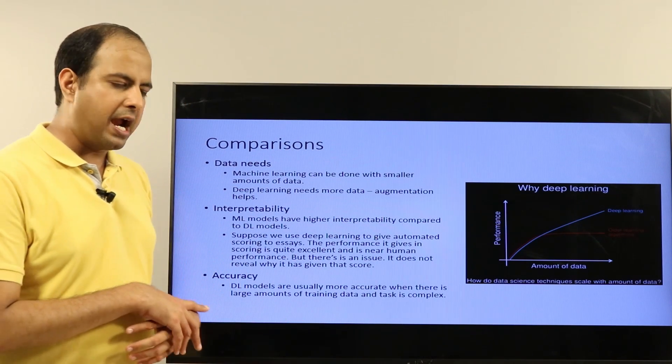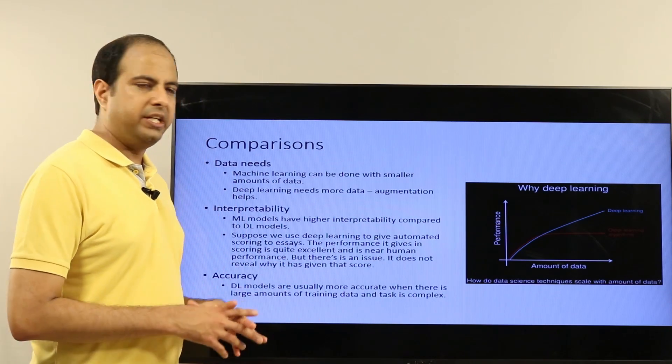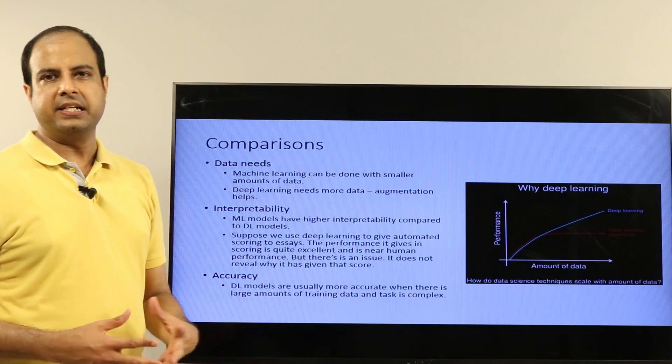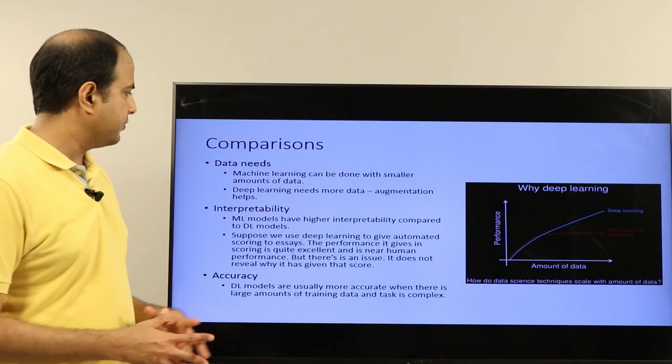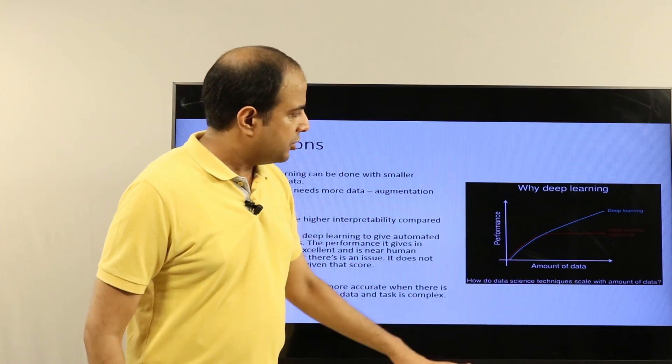There's something called data augmentation that helps solve the problem of small amounts of data, but it's best to have large amounts of data. As this chart shows, if you have large amounts of data, older machine learning algorithms will give you some accuracy, but deep learning algorithms can guarantee much better accuracy with large amounts of data.